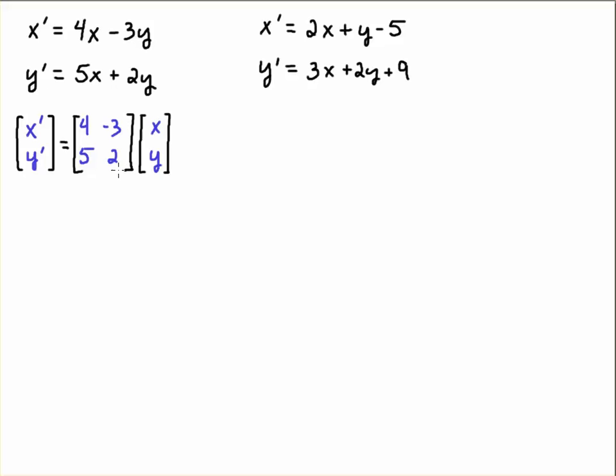You could double check your work by just performing the matrix vector multiplication. 4x minus 3y is the top row. 5x plus 2y is the bottom row and then we have x primed y primed is equal to this matrix vector multiplication. So here we have a matrix system.